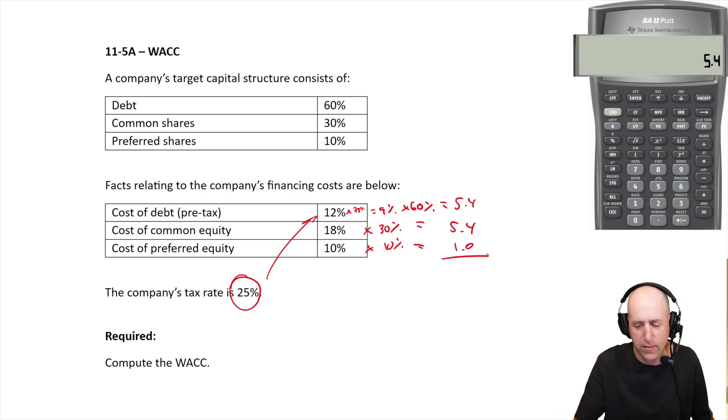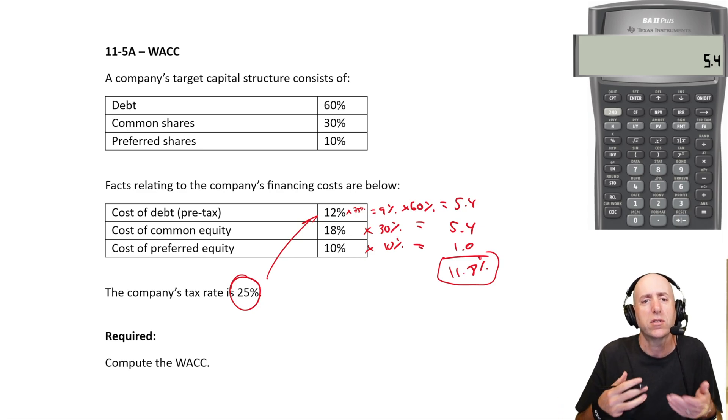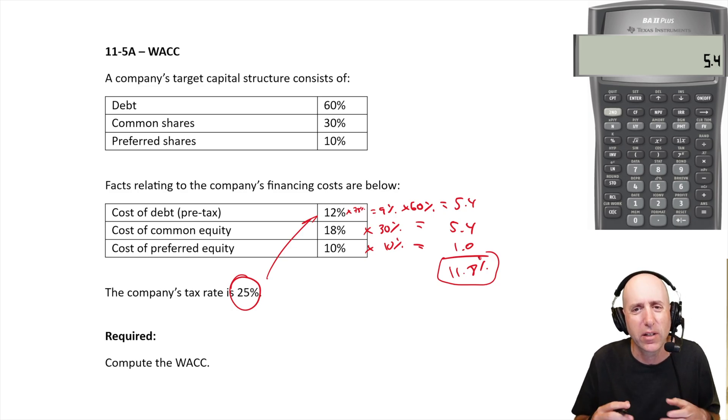Okay, so there we have it. Add them up: 5.4, 5.4, 1 - it's 11.8%. That's our weighted average cost of capital. That number is what the company ought to be using when it's looking at a project and has to compute its required rate of return. You know that number we've taken as given the whole course? Well, this is how the company figures out the number, and we've figured out how to do cost of debt and cost of equity in previous questions.